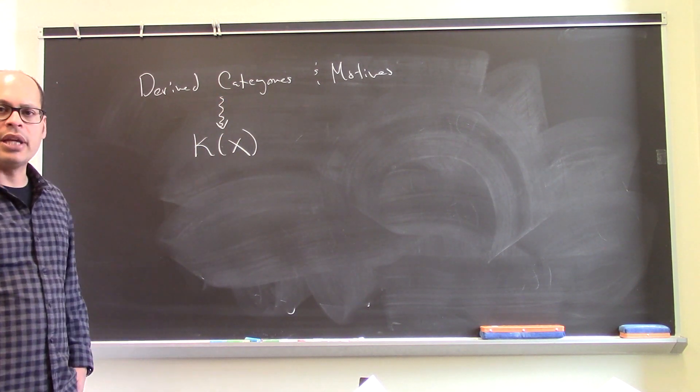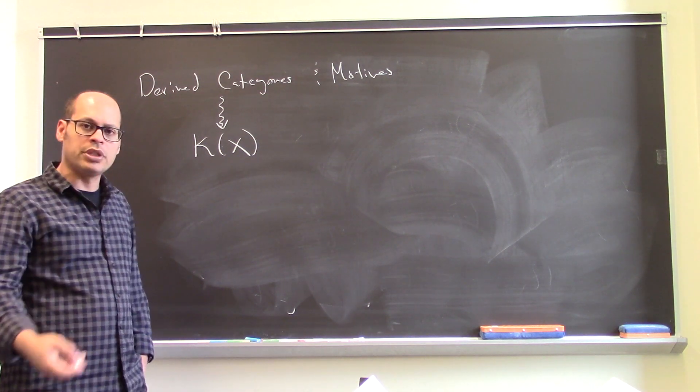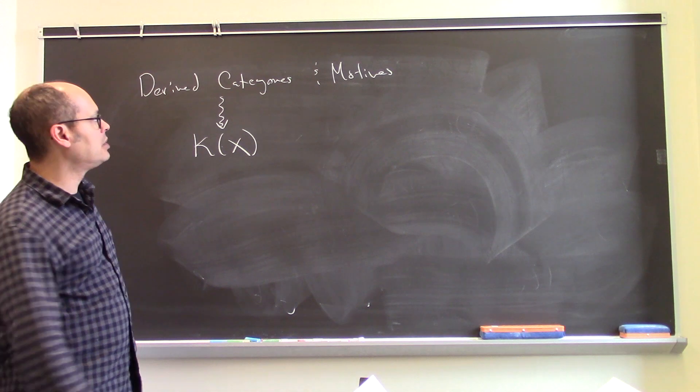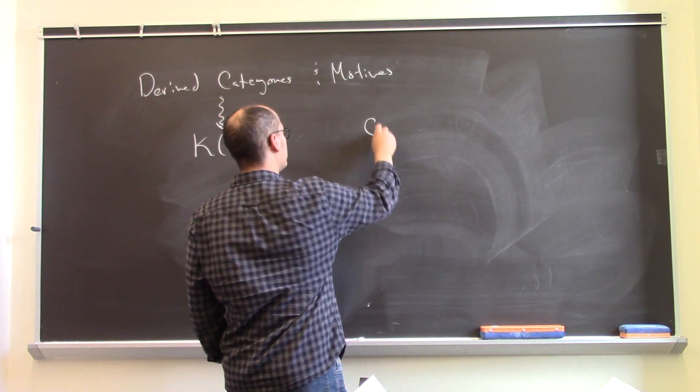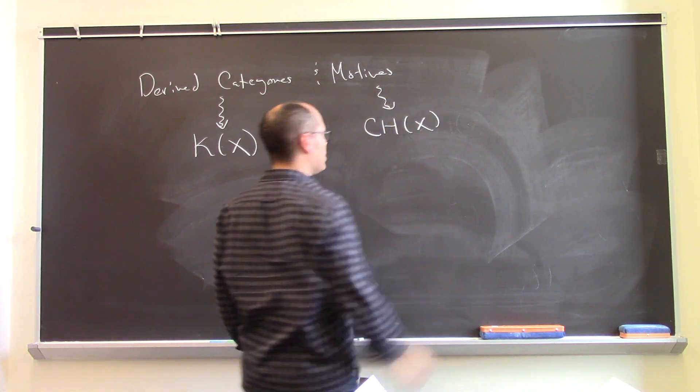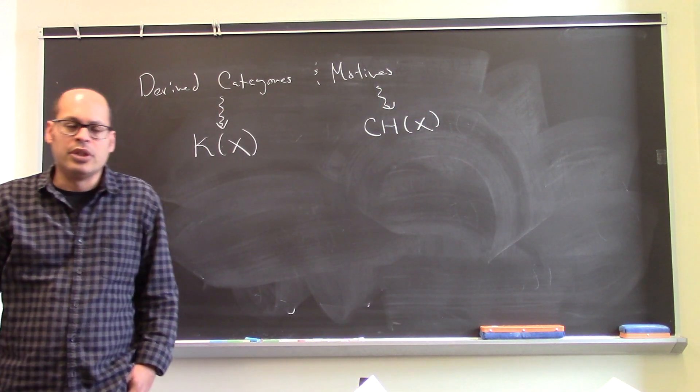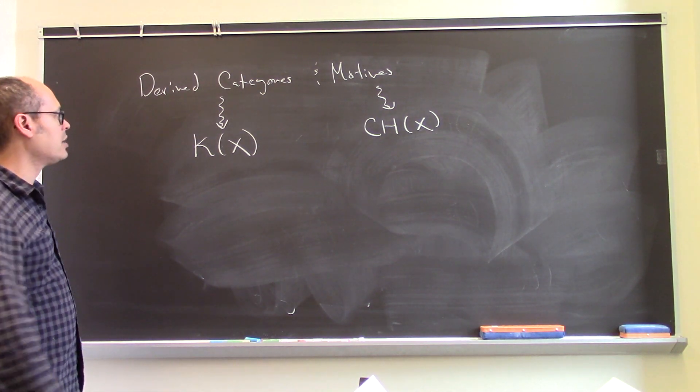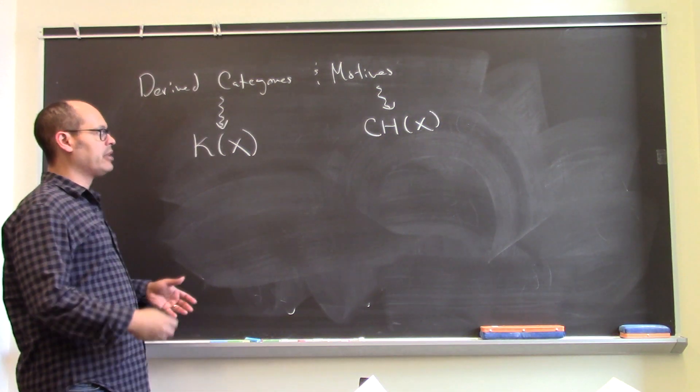So the derived category determines the K-theory and contains a much richer kind of information, but it's kind of K-like information. The motives determine the Chow groups and are, you can think of it as sort of an enrichment of the Chow groups. I mean it's a much richer thing, but it has a Chow-like flavor.